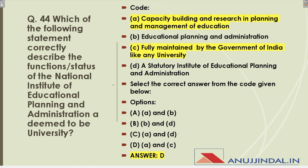Question 44: Which of the following statements correctly describes the functional status of the National Institute of Educational Planning and Administration, a deemed-to-be university? Looking at the most fitting option — it is fully maintained by the government of India like any university. Its role includes capacity building, research, and planning and management of education. The correct options are A and C.